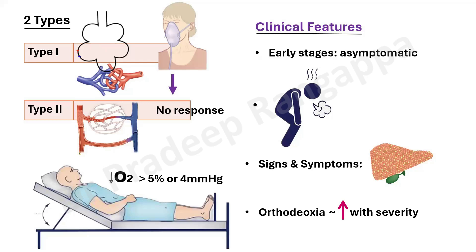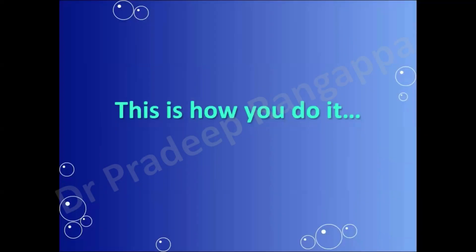We will now show a video on how the agitated saline test is done to determine the presence of a hepatopulmonary shunt causing hypoxemia. All clinicians should contemplate doing this test in CLD patients when other obvious causes of hypoxemia are ruled out. The emphasis is on the ease of performing this test at the bedside to establish the diagnosis and plan the definitive therapeutic modality — liver transplantation.